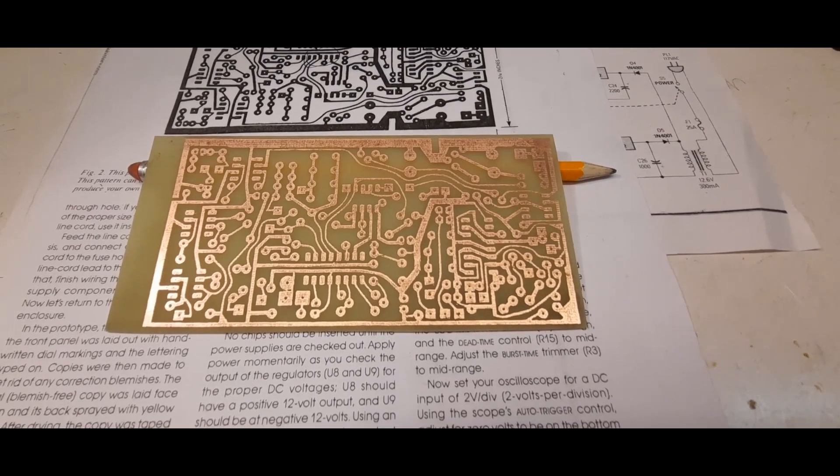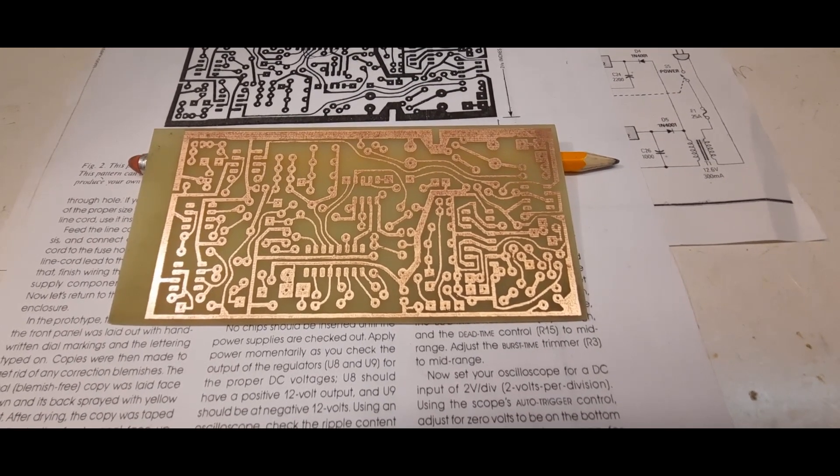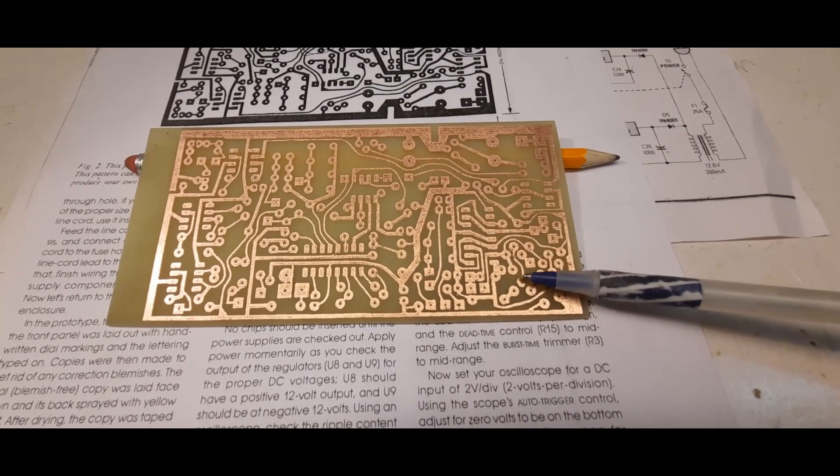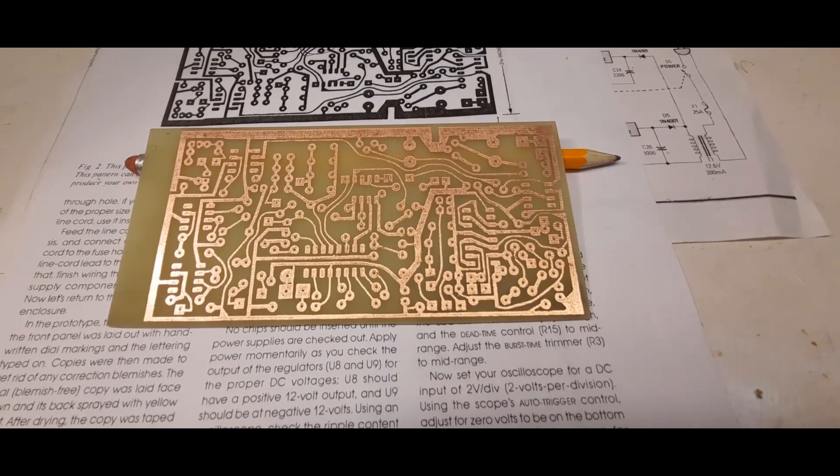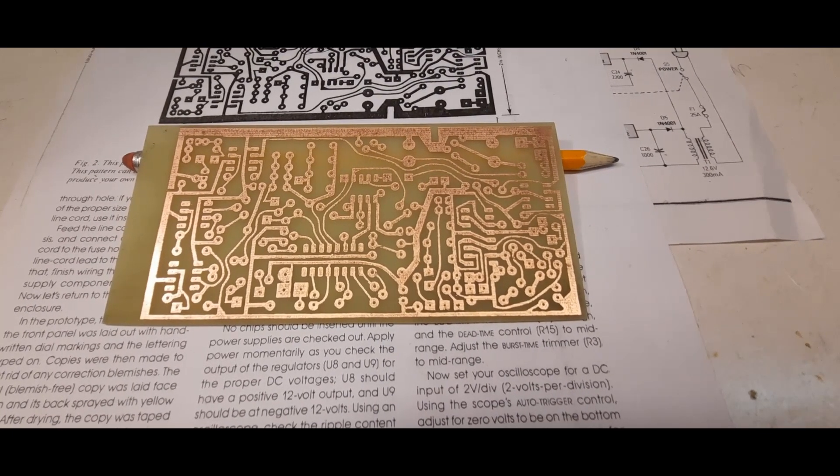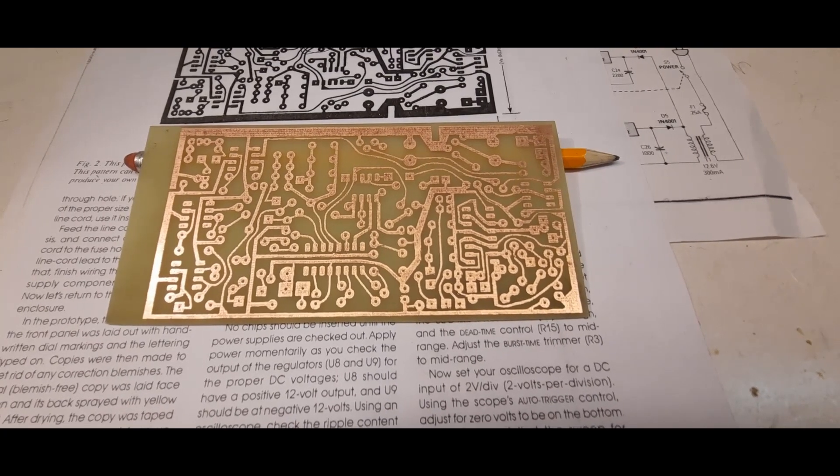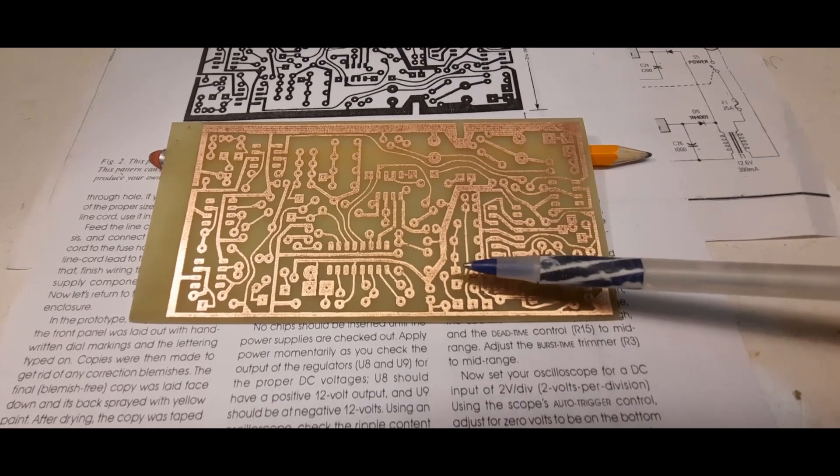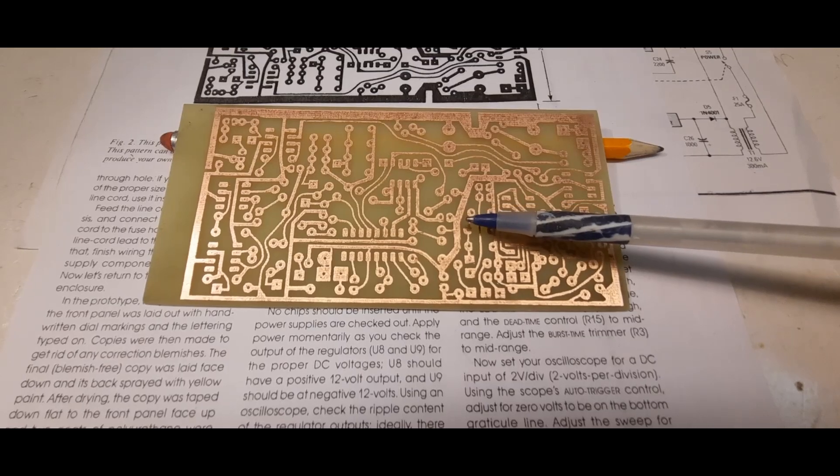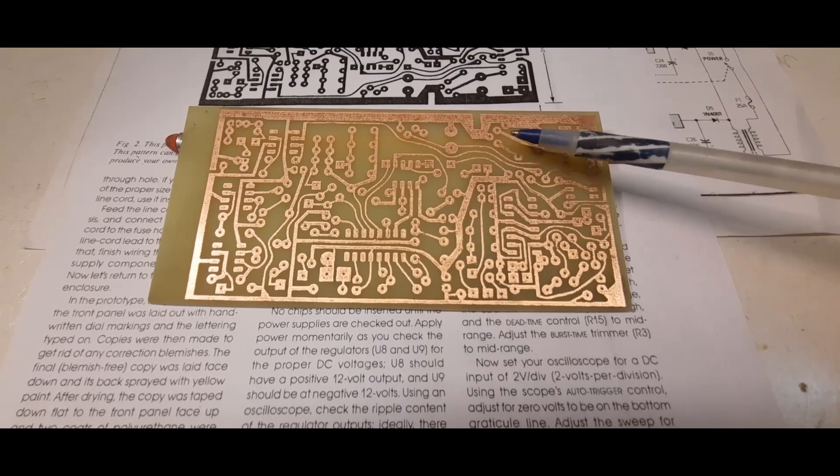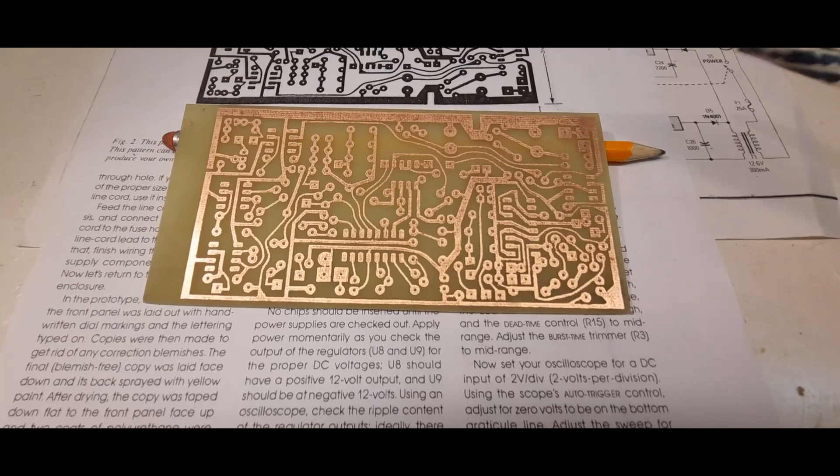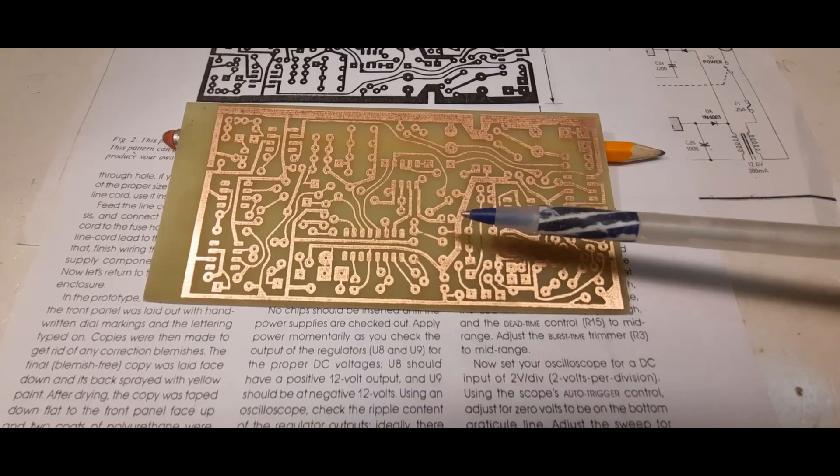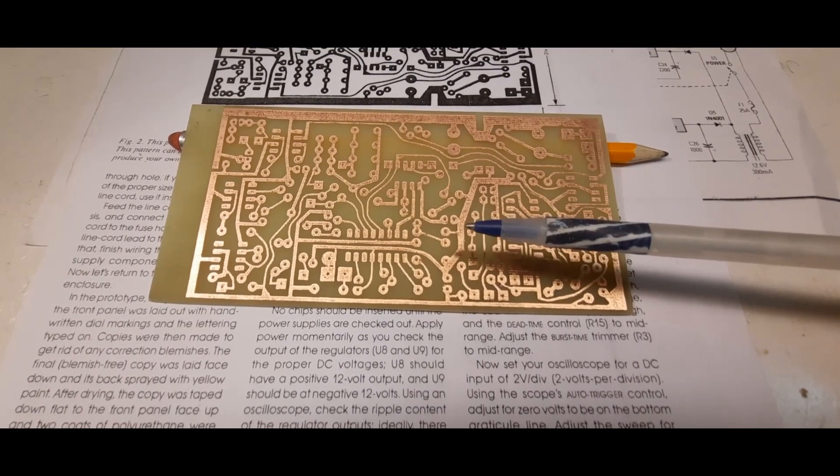Good news - the board came out pretty good, much better than last time. The real big improvement is the fuzziness between the traces. By scratching out that fuzziness before etching, I solved the problem. The actual traces still have a little airiness to them, but I think they all have continuity.